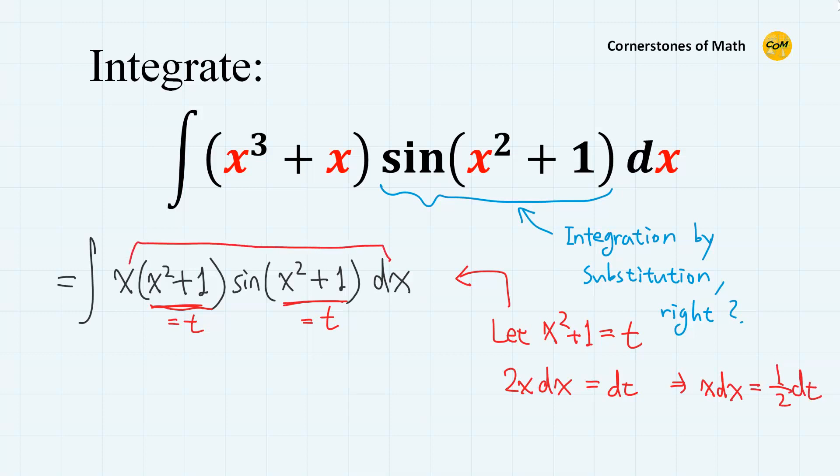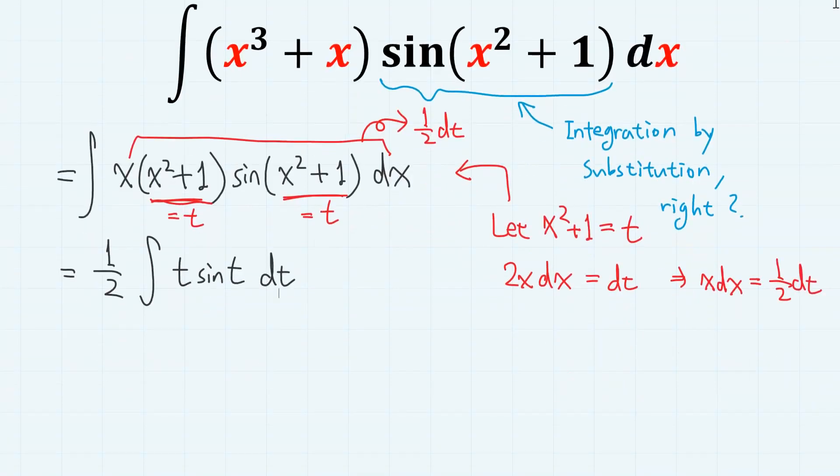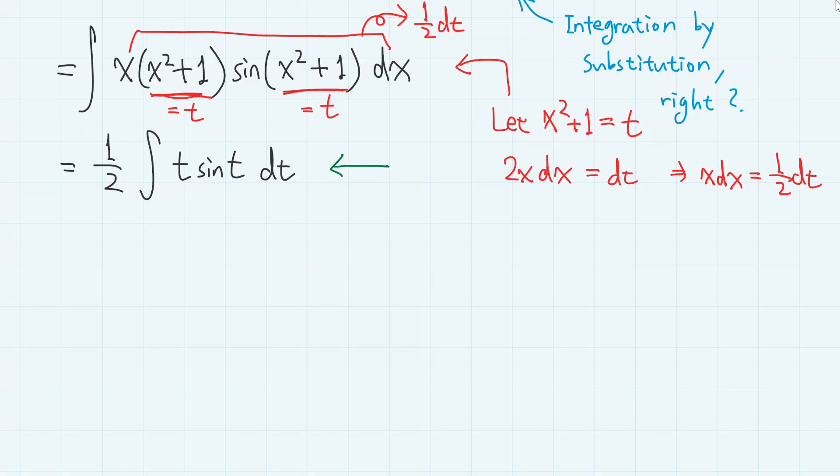So this x dx part becomes 1 half dt, which gives 1 half at the front, then integral t sine t dt. And this is very famous integral. It's a textbook example of integration by parts.